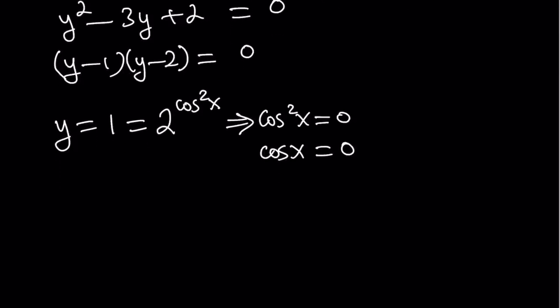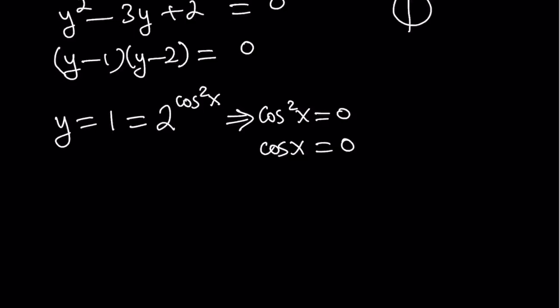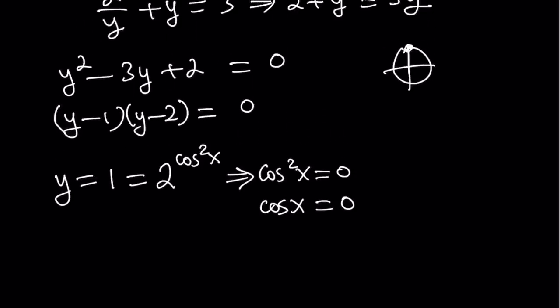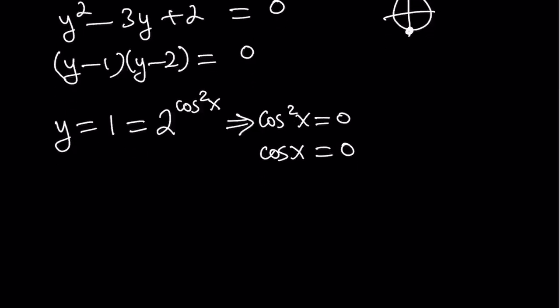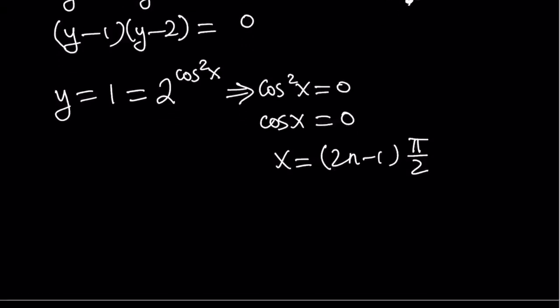Now from here what do we get right? When cosine x equals 0, if you think about the unit circle, unit circle tells us that okay cosine is 0 at pi over 2 and 3 pi over 2. And of course it's just going to keep rotating. So it also means that we're basically dealing with odd powers of pi over 2 which we can write as 2n minus 1 multiplied by pi over 2 where n is a positive integer. It could also be a negative but it's just an integer anyways.